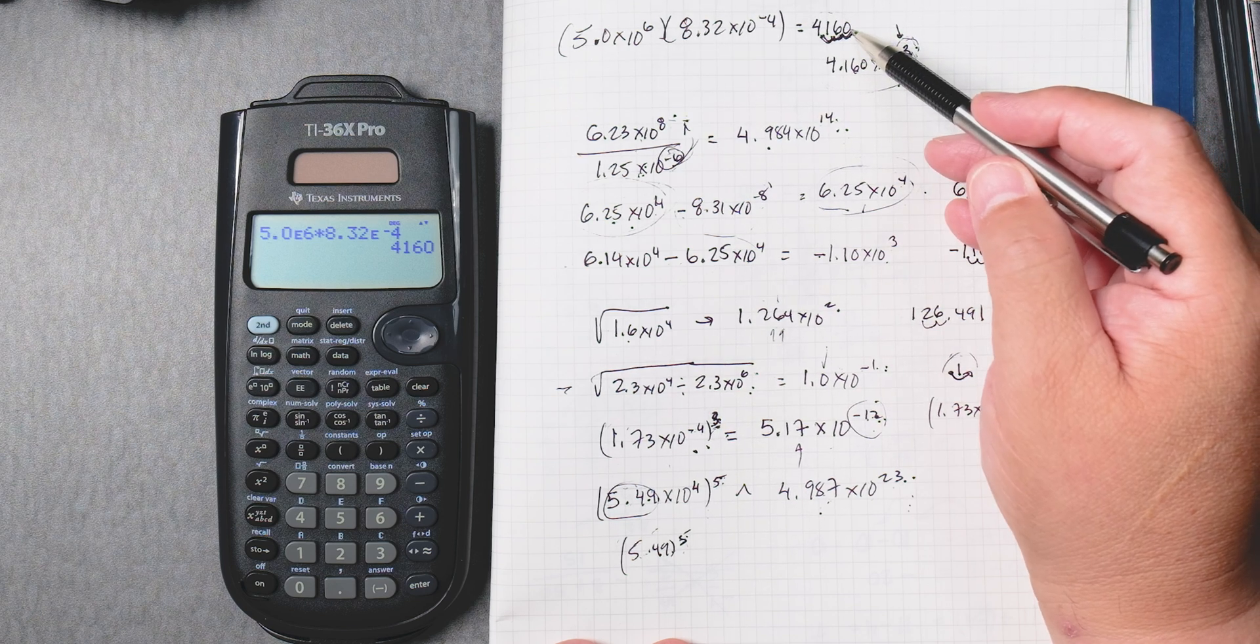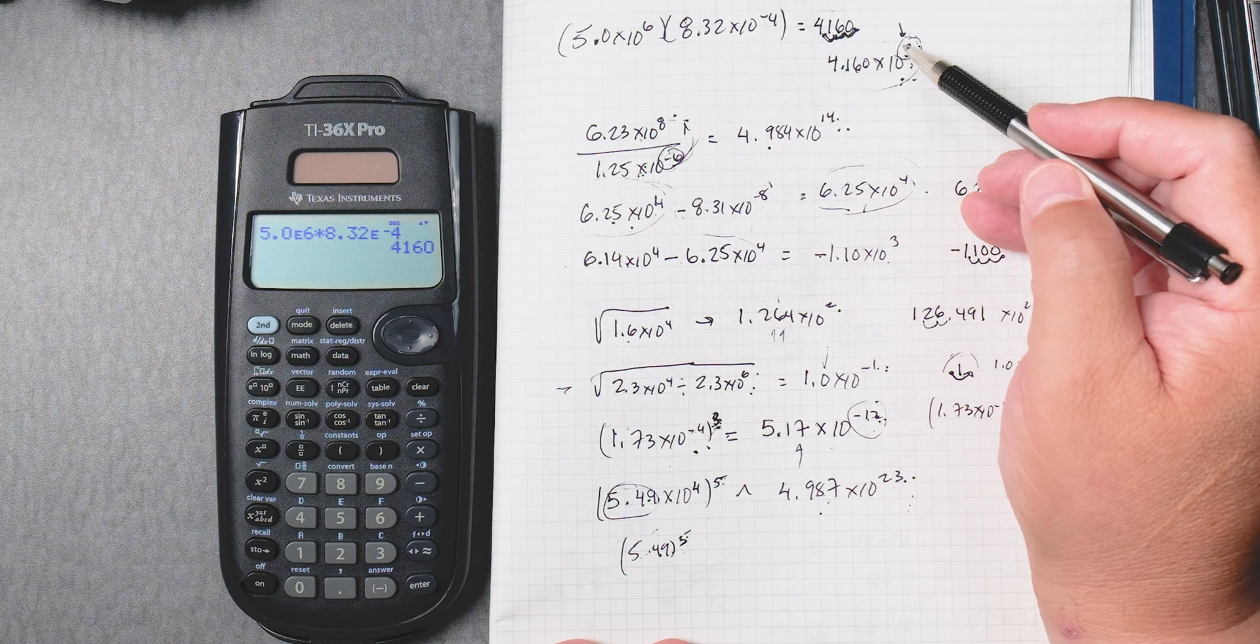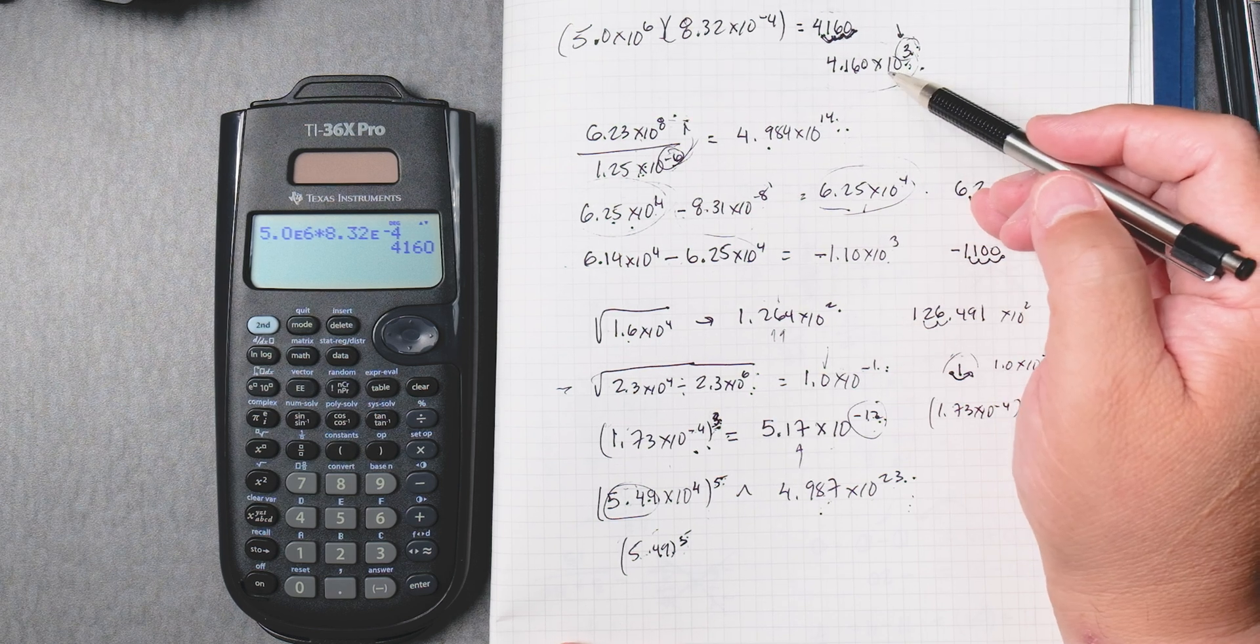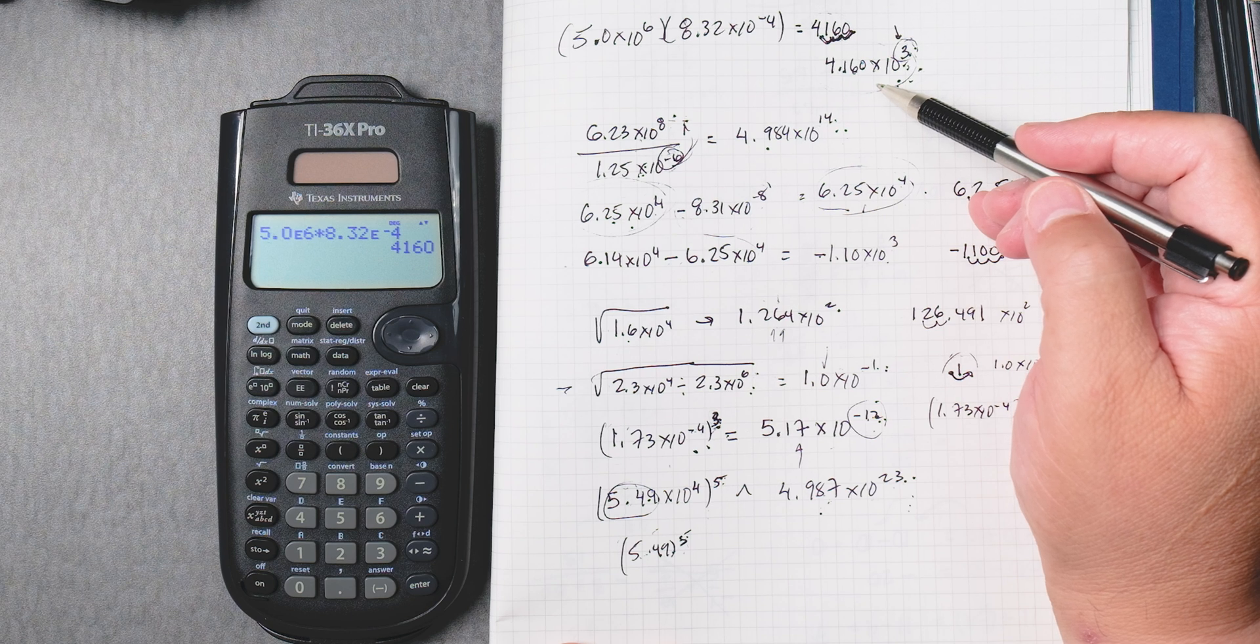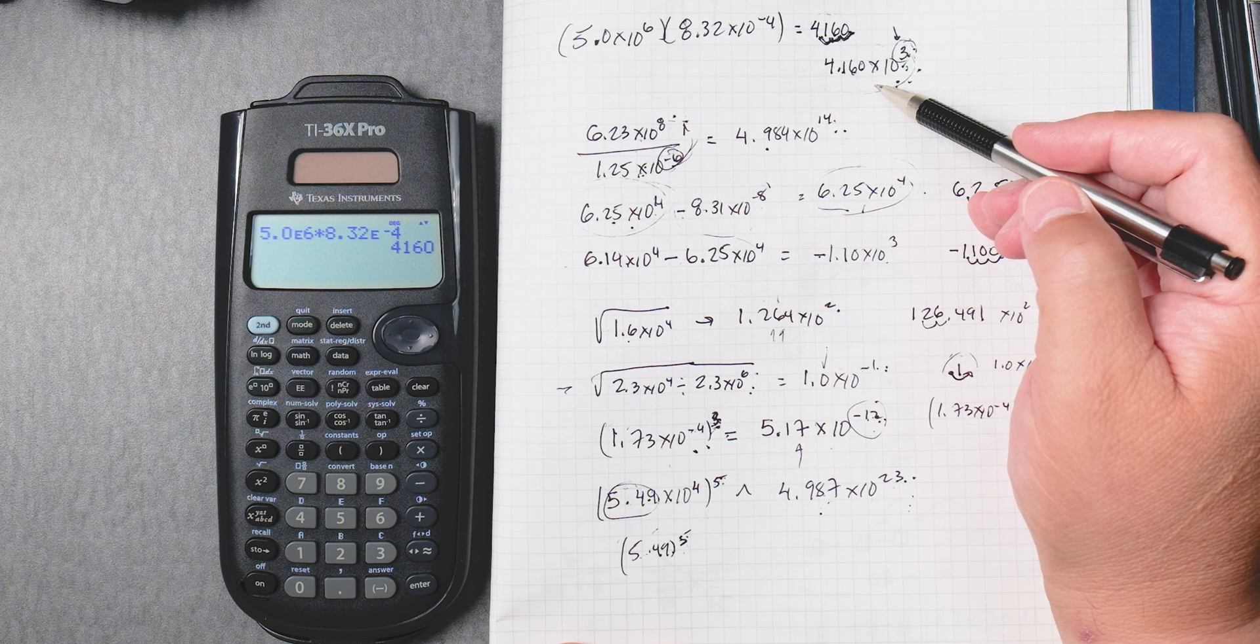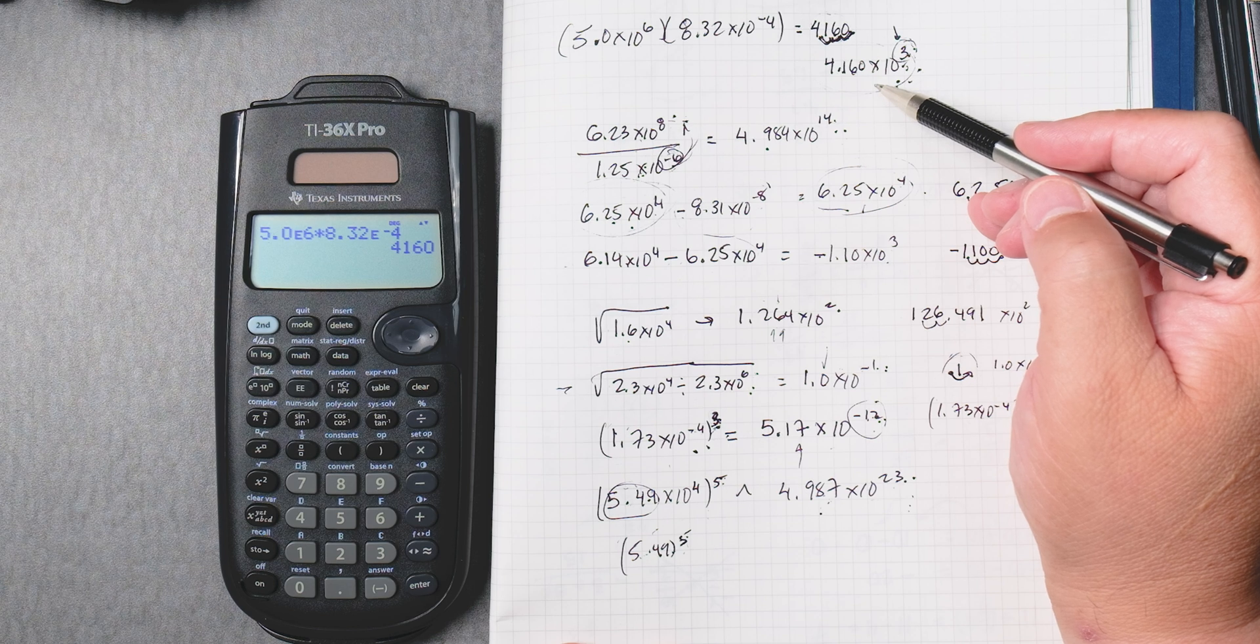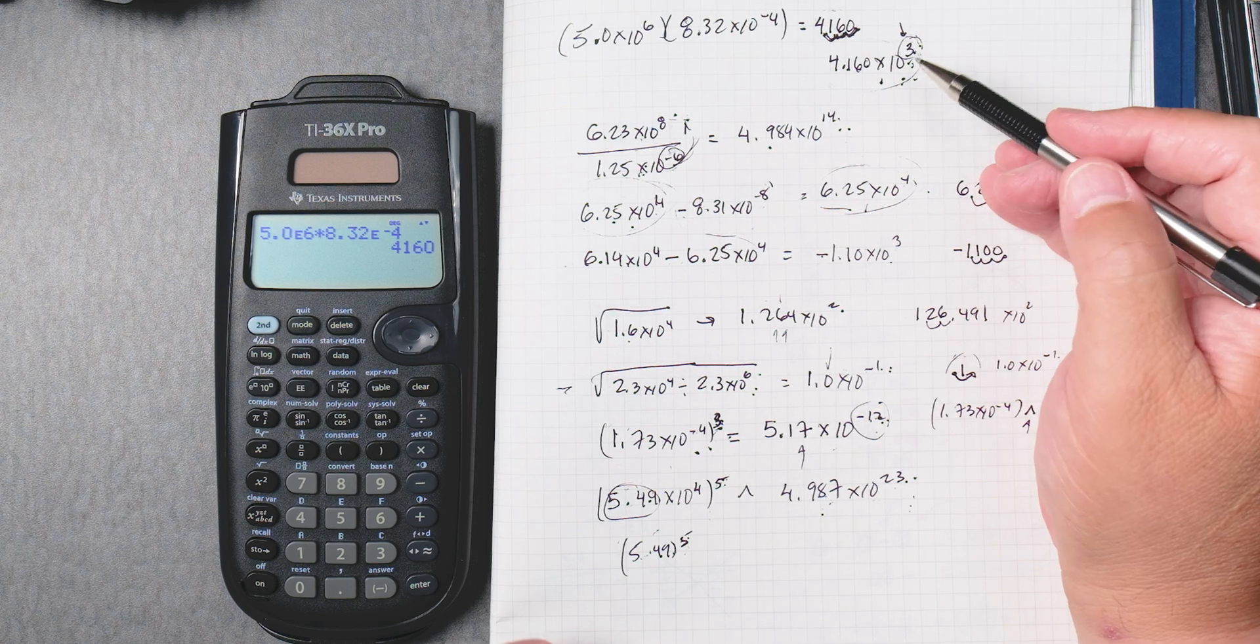Because if you're moving this over three places to the left, making this big number to a small number, then the exponent's going to be big. If you want to know more how to do this manually, check out my scientific notation video, and I do this by hand, step by step.